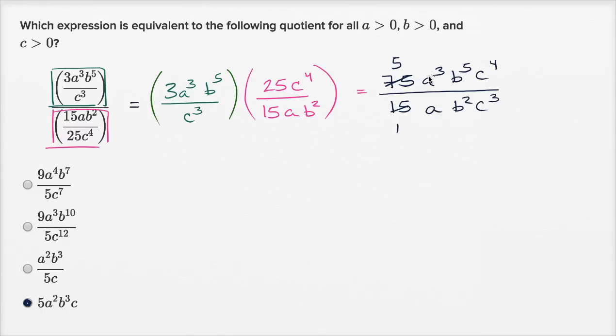If I divide a to the third by a, I could divide these both by a. This becomes a squared, this becomes one. b to the fifth divided by b squared, that's going to be b to the third power. So this is going to be b to the third power, this is going to be one. c to the fourth divided by c to the third, that's just going to be c. c to the third divided by c to the third is just going to be equal to one. So you get five a squared b to the third c, which is exactly what you have here.